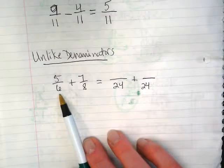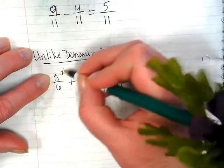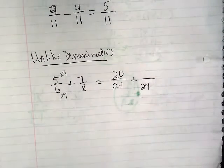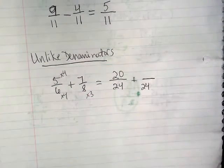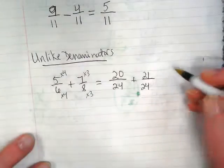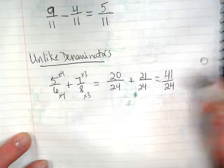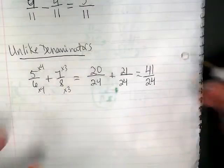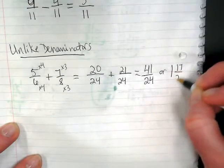So we're going to rewrite this as something over 24 plus something over 24. What am I multiplying 6 by to get to the 24? This is getting multiplied by 4, so this also has to be multiplied by 4. And we get 5 times 4 would be 20. And then we have to think about 8. 8 gets multiplied by 3 to get 24. So 7 also has to get multiplied by 3, and we end up with 21. 20 plus 21 gives us 41 over 24.